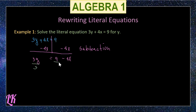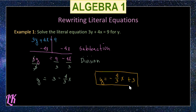We divide all terms by 3. 3 divided by 3 is 1, times y equals y. 9 divided by 3 equals 3, and negative 4x divided by 3 is negative 4/3 of x. So the answer is y = 3 - (4/3)x, or equivalently, y = -(4/3)x + 3.